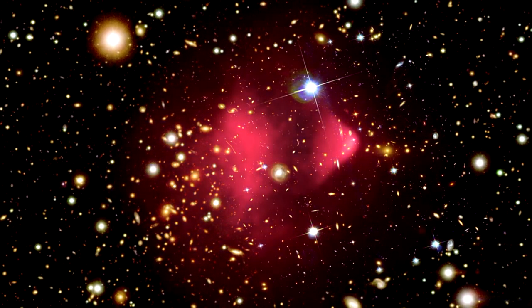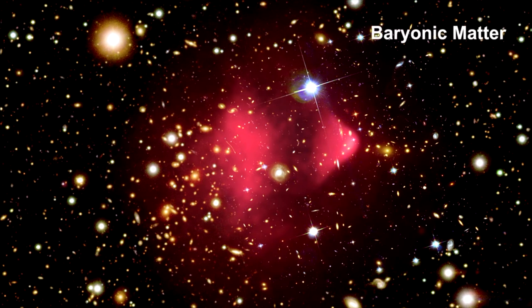Here we have the cluster's hot X-ray-emitting gas detected by the Chandra X-ray Observatory. The two pink clumps contain most of the normal matter, sometimes referred to as baryonic matter, or matter made up of protons and neutrons. The bullet-shaped clump on the right is the hot gas from one cluster, which passed through the hot gas from the other cluster during the collision.